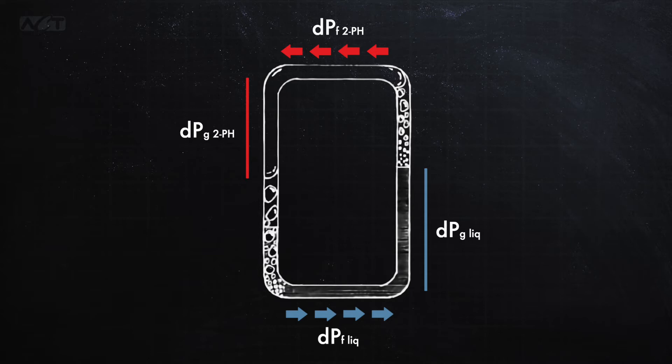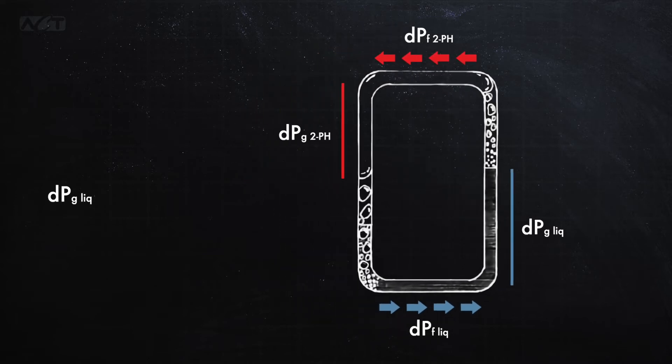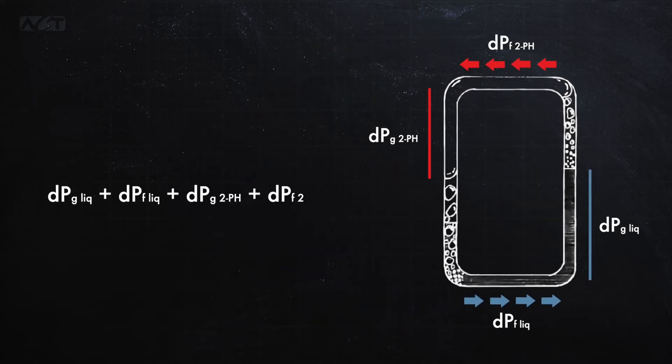If these frictional pressure drops are too large, either the tube diameter should be increased or the condenser height must be raised to increase the liquid head. The important thing to remember here is that when the system is operating at steady state, the sum of the liquid and vapor gravitational head and frictional pressure drops must be equal to zero. The model we developed relies on this pressure drop balance to calculate the steady state mass flow rate and heat transfer characteristics.